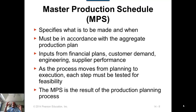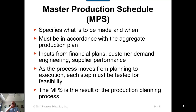For example, if the aggregate plan calls for an overall production of 1,000 units, then when you combine all the individual products in your master production schedule, they should total 1,000 — not less, not more. So there must be a direct connection between the master production schedule and the aggregate production plan.